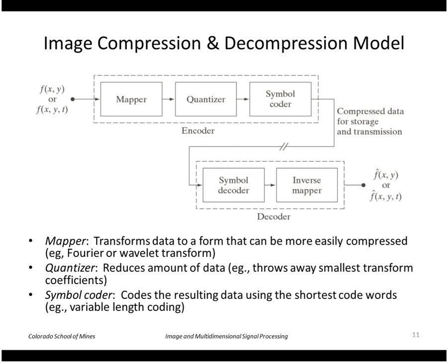So in general the compression and decompression model is shown here. We start with our original image f of xy or we might have a time sequence of images in which case it's f of xy and t for time. So the first thing we do is pass it through a mapper process and this transforms it to a form that can be more easily compressed. For example we can use a Fourier transform or a wavelet transform.